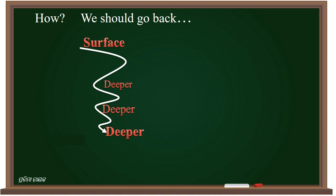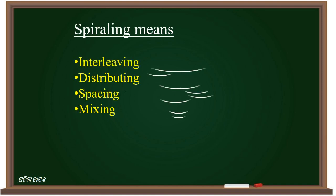And it can be in the long-term memory. So spiraling means interleaving, distributing, spacing, mixing the concepts.